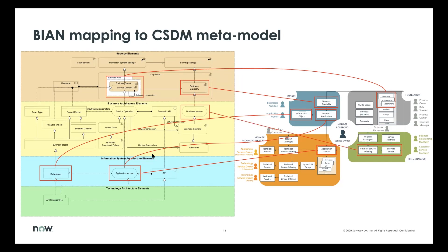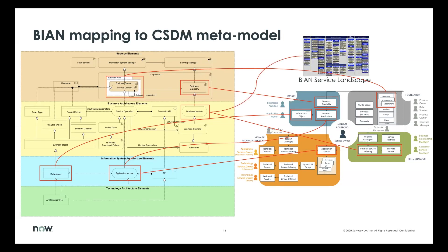The next area is the business service, which aligns largely with the business service and business service offering in CSDM. There's a pretty good alignment there. They don't break out offerings in BIYN — we do, so that's a bit of a difference. BIYN also has what they call a service landscape — a set of services which define what these happen to be. The service landscape could be used in a couple of different areas, but primarily for the business service. We'll look at this more closely in a minute.